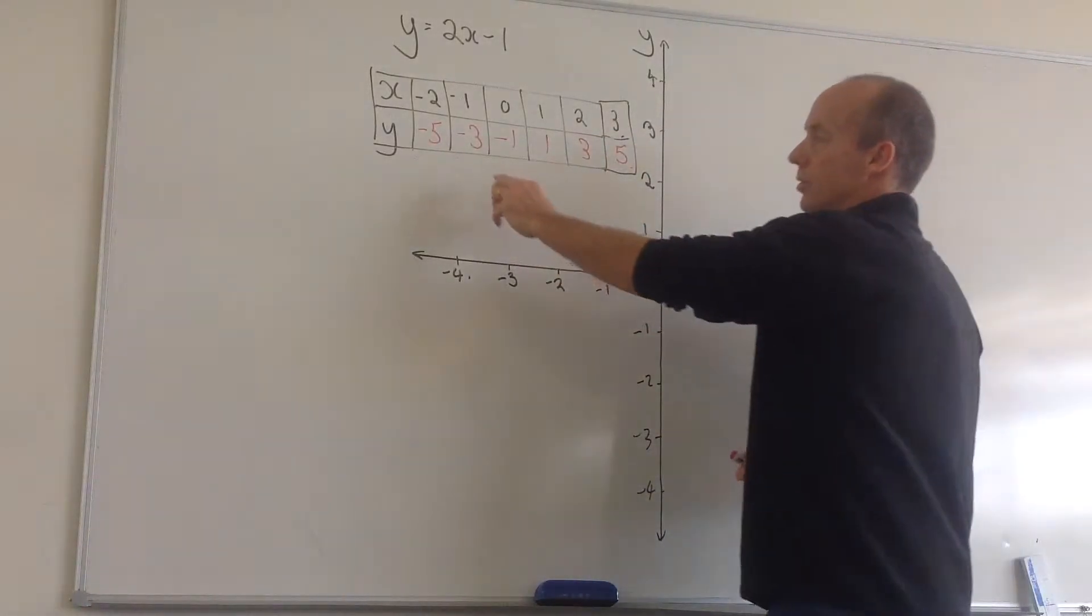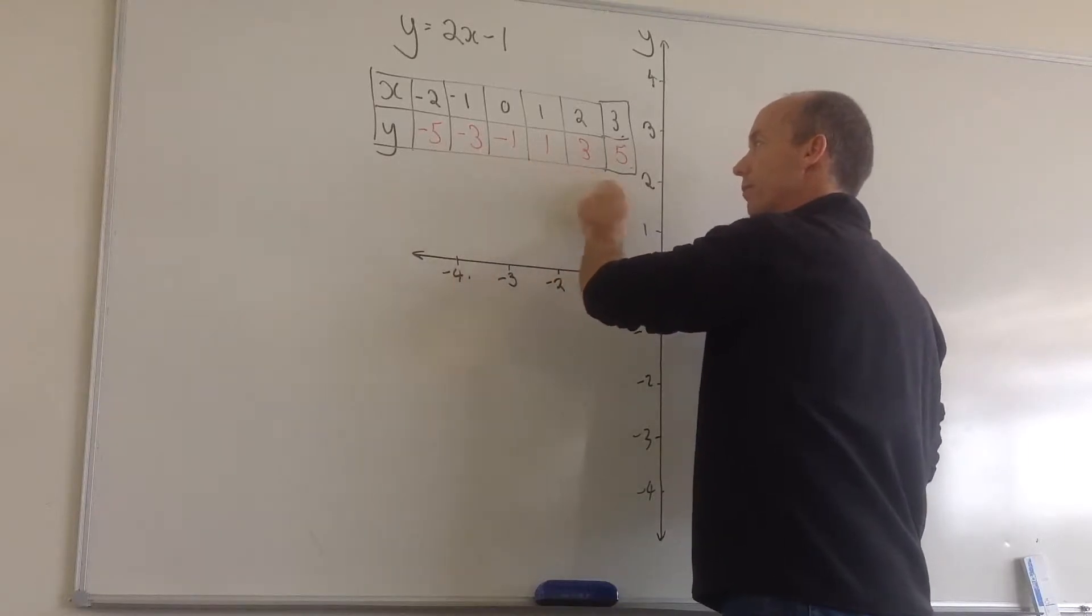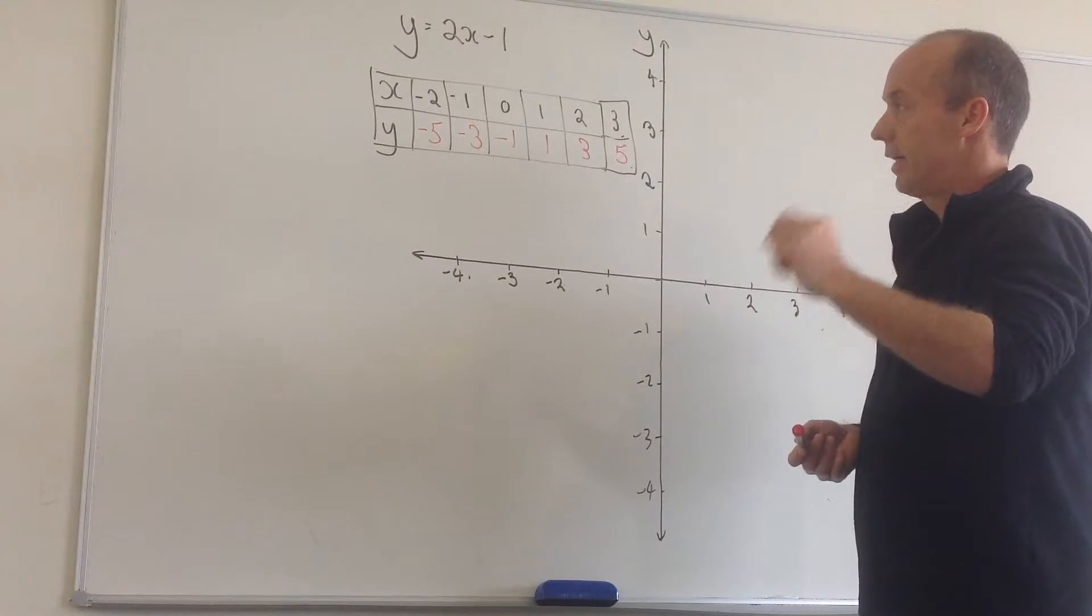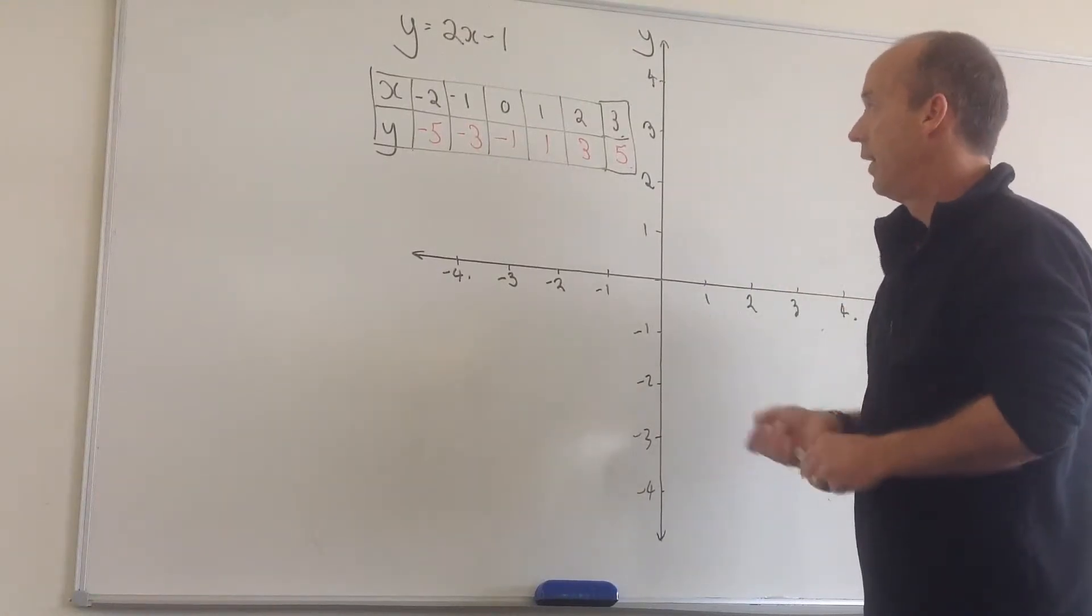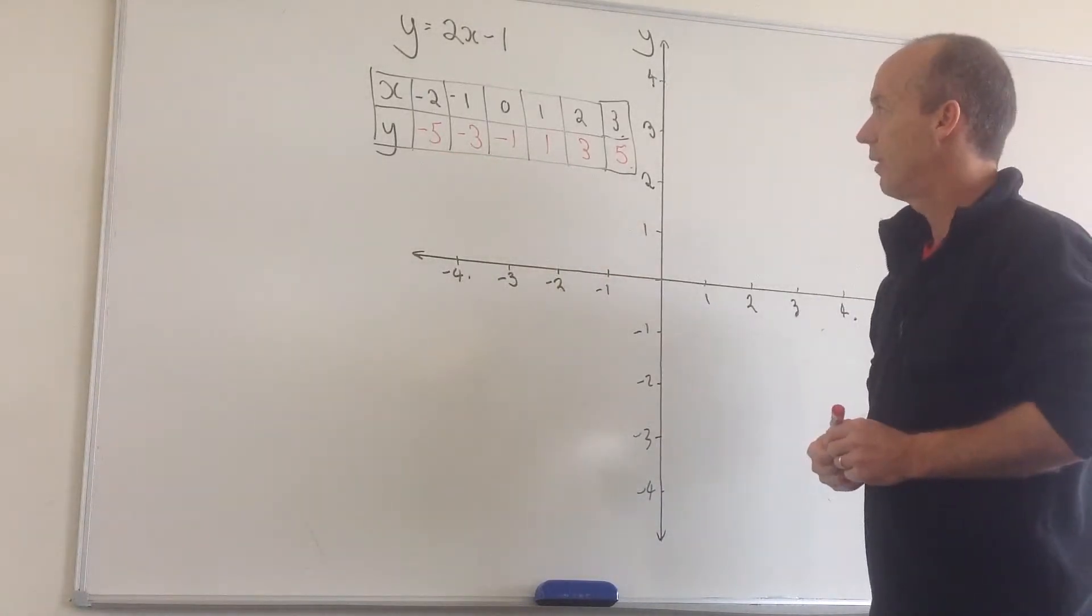Now some of you might be able to identify that this is going up by the same amount each time. So we should see that. We should see that it's going up by an even amount. Now what I do is put these points onto my graph.